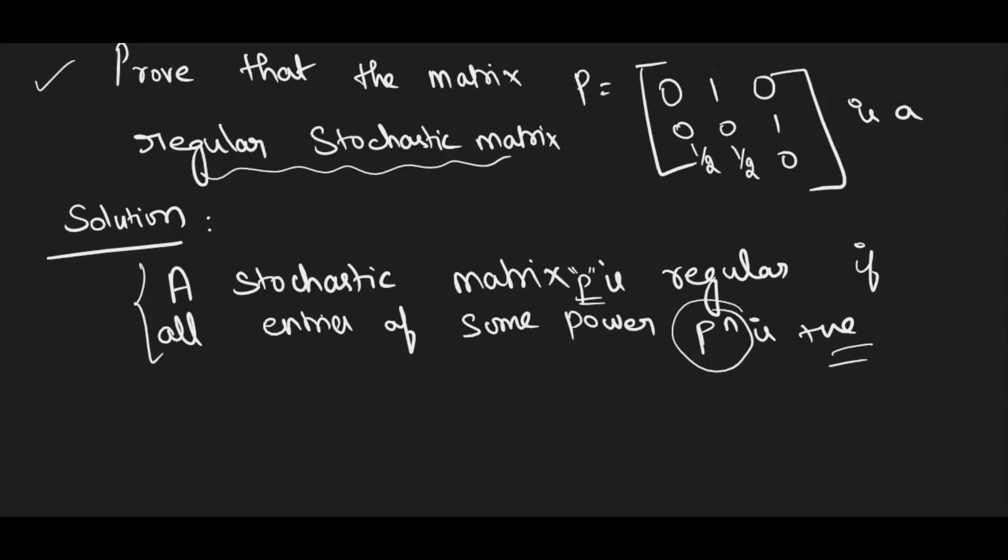The stochastic matrix P is said to be regular if all entries of some power P^n are positive. So given the matrix P, you have to find P², P³, P⁴, at least find till P⁵, and you have to check whether all entries are positive. And one more thing, the basic condition for a stochastic matrix is if you add each value in the row, you should get 1.